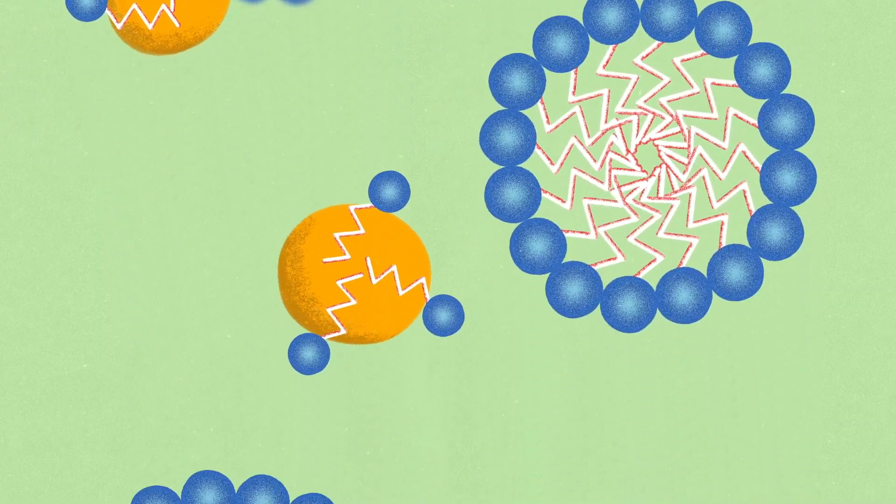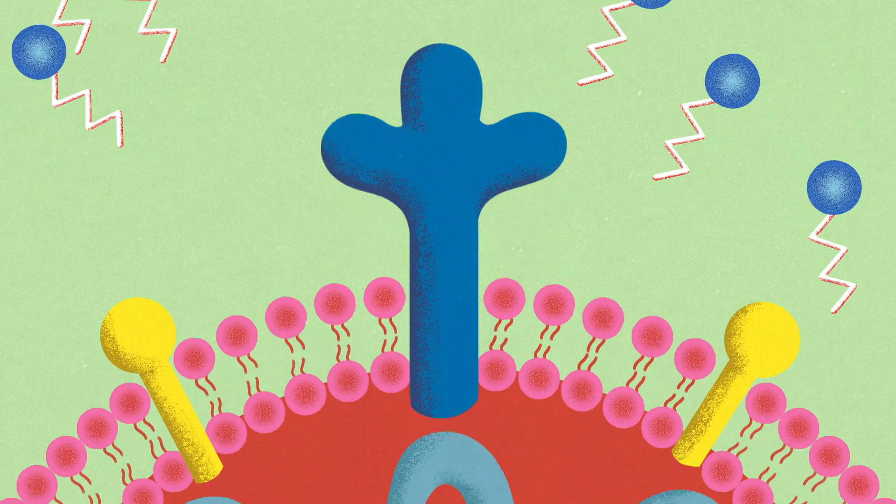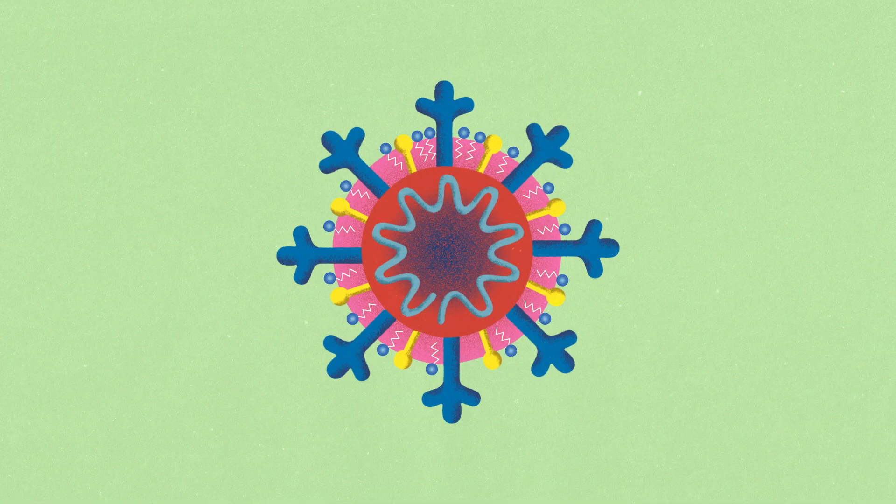When they encounter coronaviruses, the water-repelling tails are attracted to the fatty envelope around the virus and insert themselves into the protective layer. The virus shatters and is doomed down the drain.